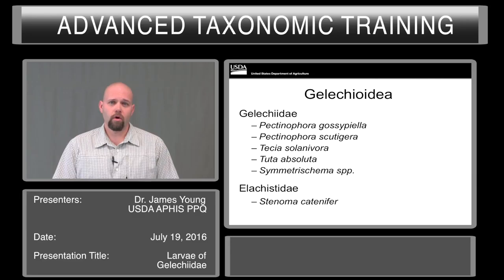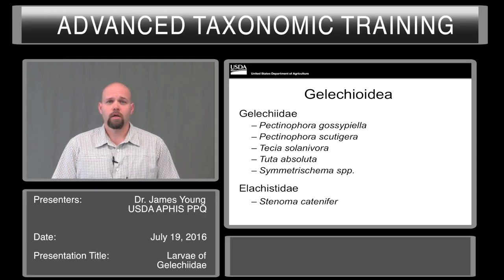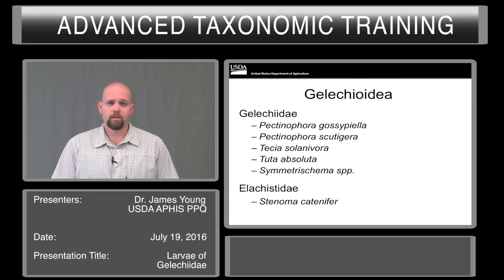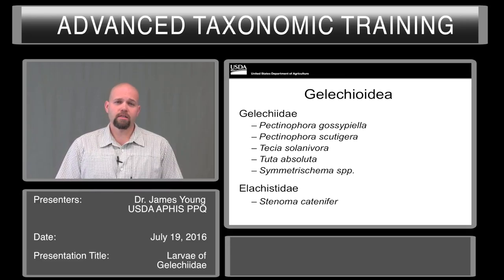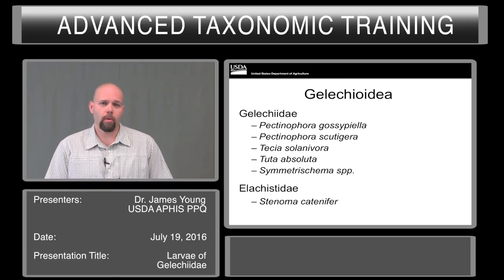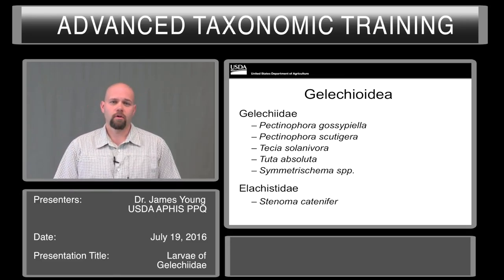The key taxa include Pectinophora, Gossypiella, Pectinophora scutagera, Tecia solanivora, and Tuta absoluta. The last one is a species complex which is not resolved — the genus Symmetrischema. And lastly, I'll talk briefly about Stenoma catenifer, which is an elachistid.